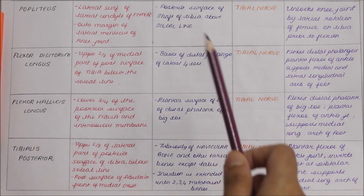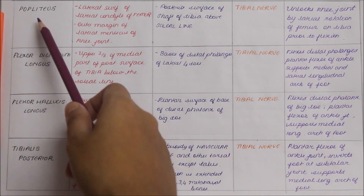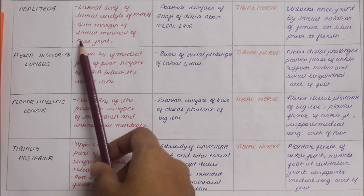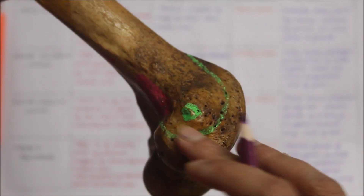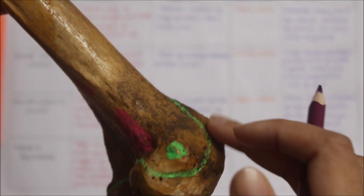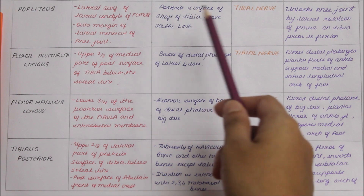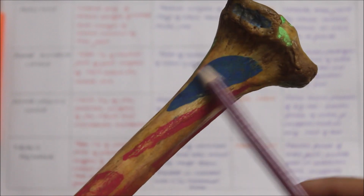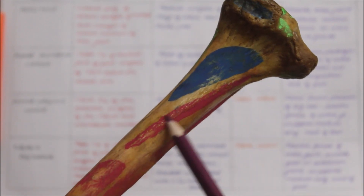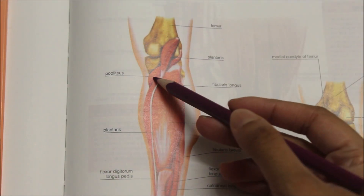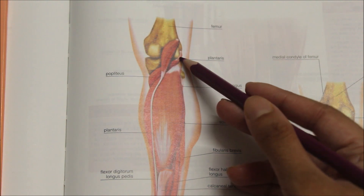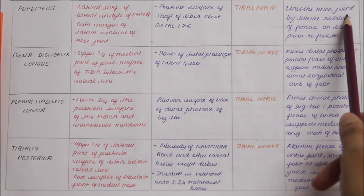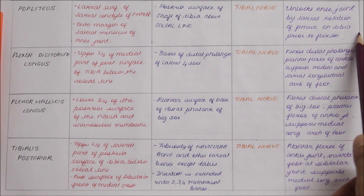Moving on to the deep muscles of the back of the leg. First we have the popliteus muscle. It originates from the lateral surface of the lateral condyle of the femur and the outer margin of the lateral meniscus of the knee joint. It inserts into the posterior surface of the shaft of the tibia above the soleal line, marked in blue. The popliteus muscle is supplied by the tibial nerve, and its action is that it unlocks the knee joint by lateral rotation of the femur on the tibia prior to flexion.